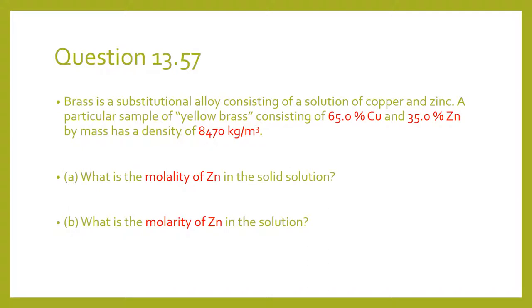Brass is a substitution alloy consisting of a solution of copper and zinc. A particular sample of yellow brass consisting of 65% copper and 35% zinc by mass has a density of 8,470 kg per meter cube. Part A is what is the molality of zinc in the solid solution and part B is what is the molarity of zinc in the solution.